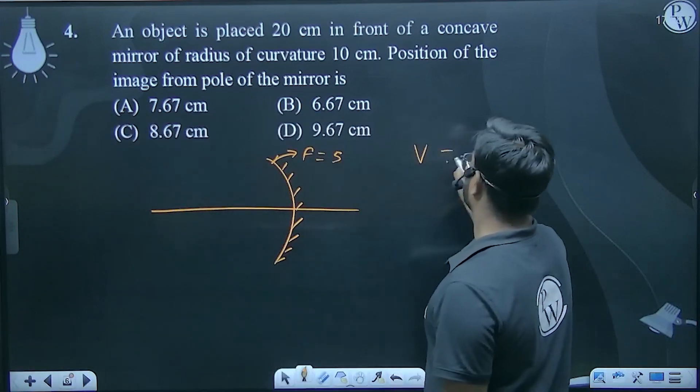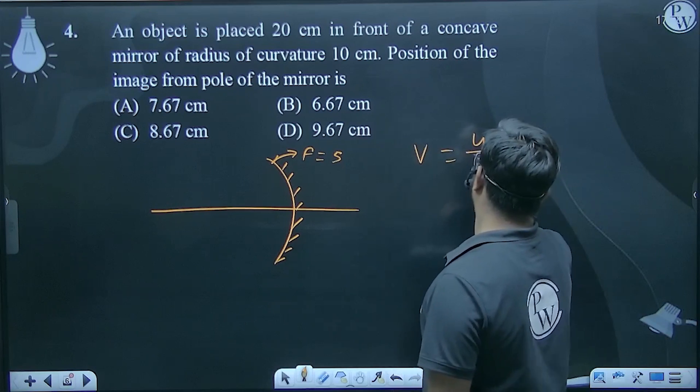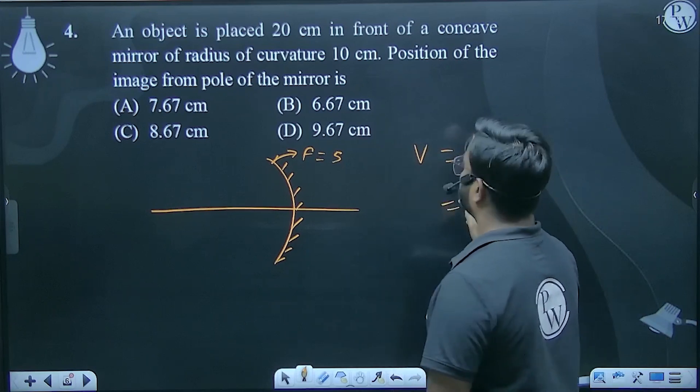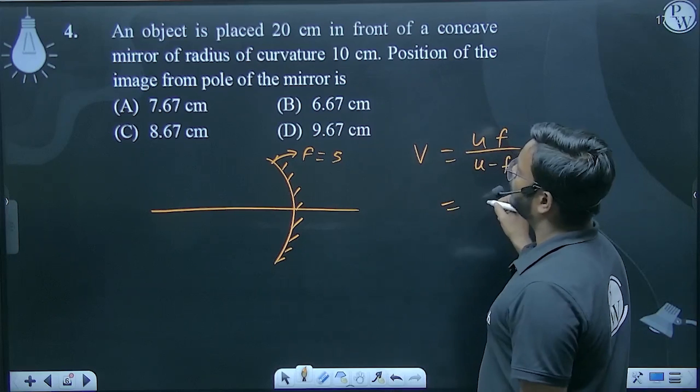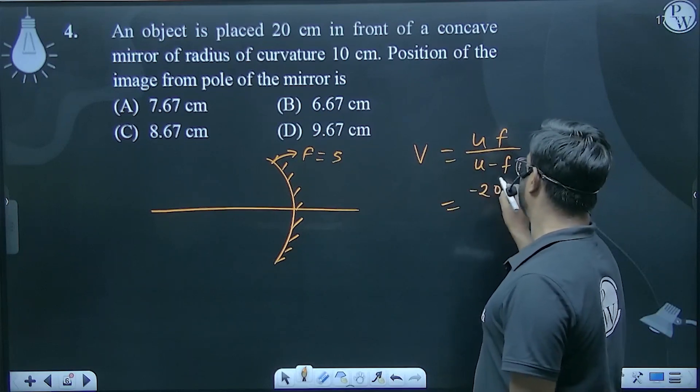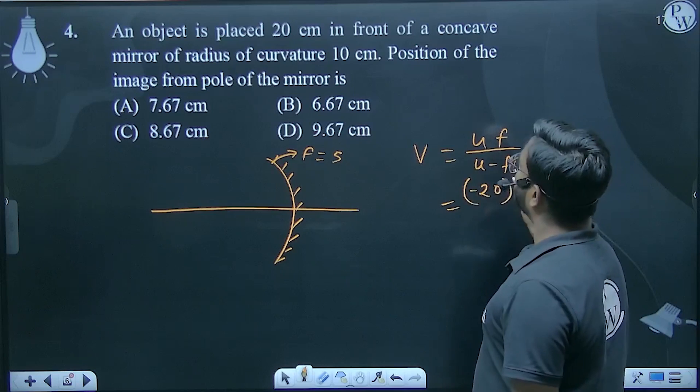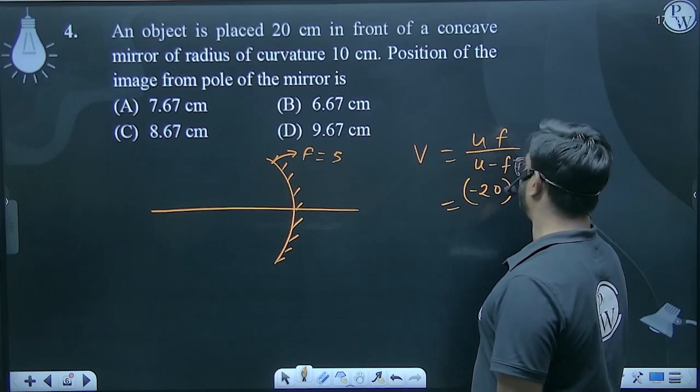V equals UF by U minus F. U is 20 cm, which is minus 20. F is minus 5.